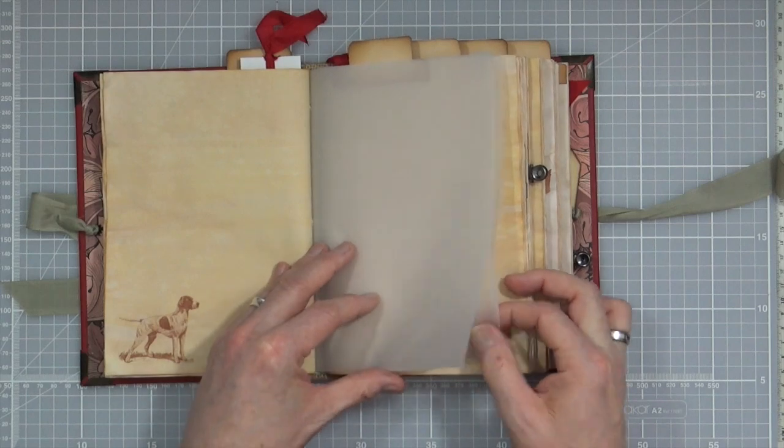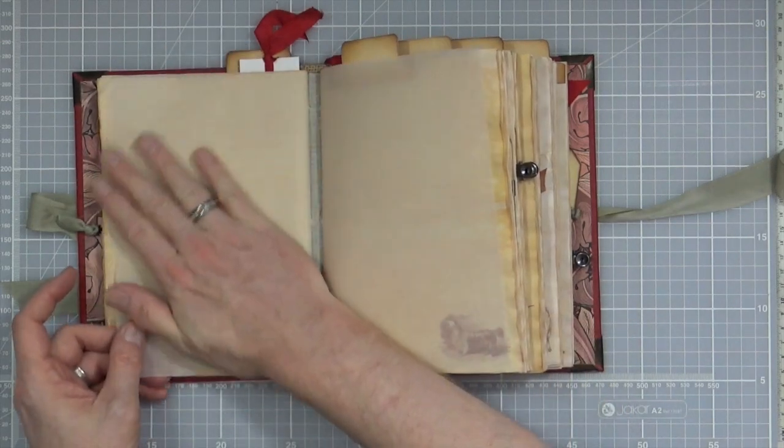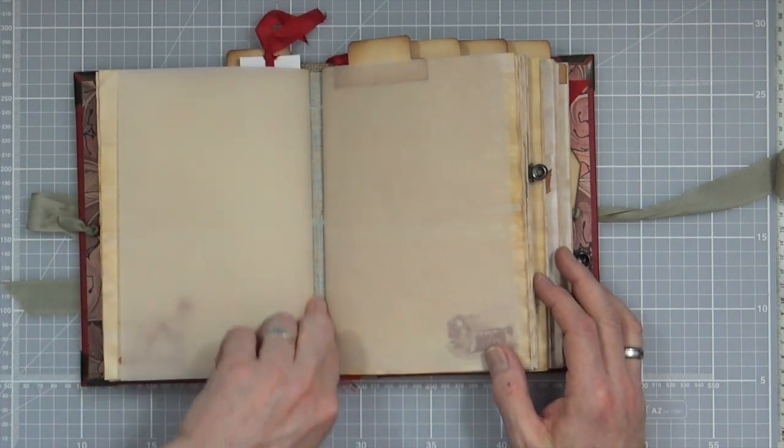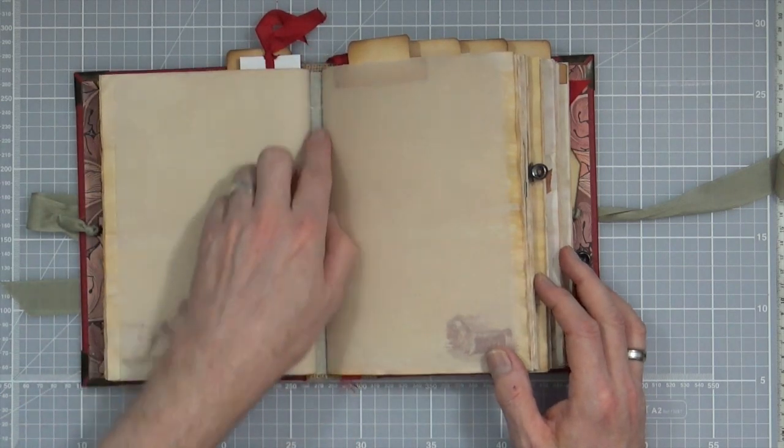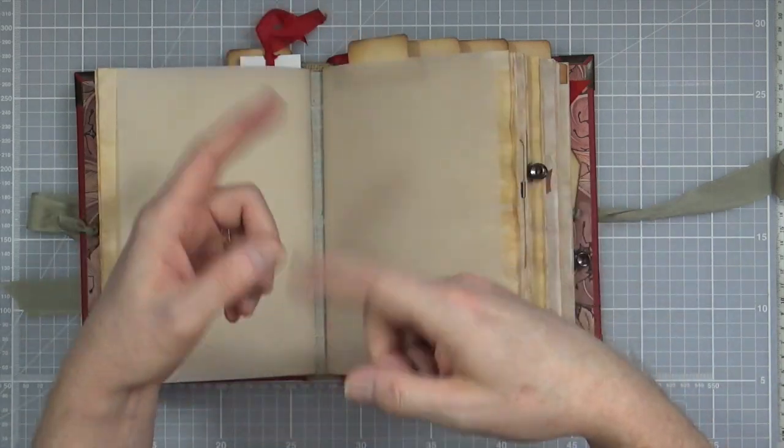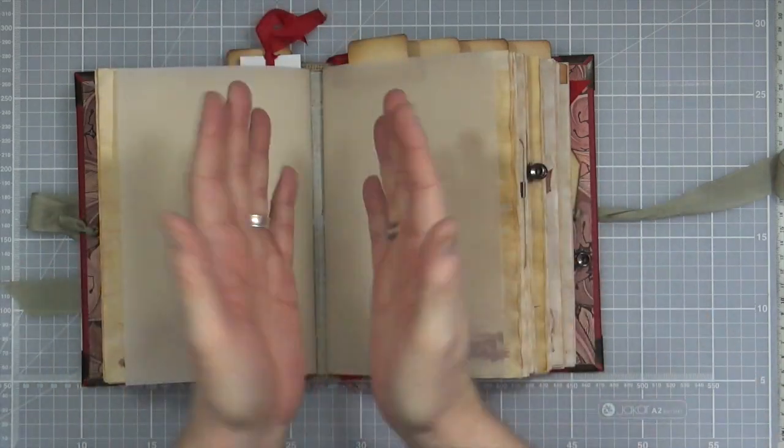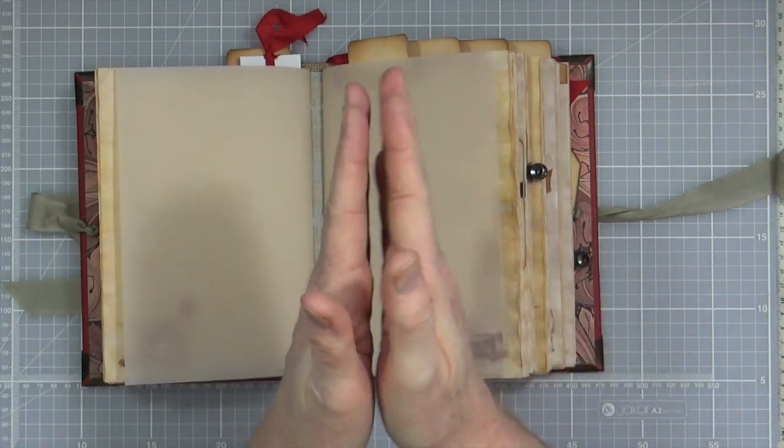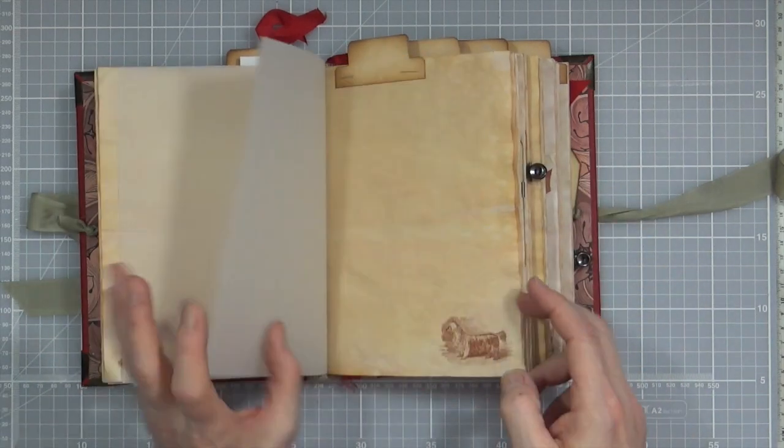Now that's the end of that first signature and again like I said I put a vellum wrap on each one. So again there's still space between the signatures if you wanted to add an elastic like a Midori kind of thing to add extra sheets in if you want to. In between each of the signatures I have left pretty much enough space for you to be able to do that.